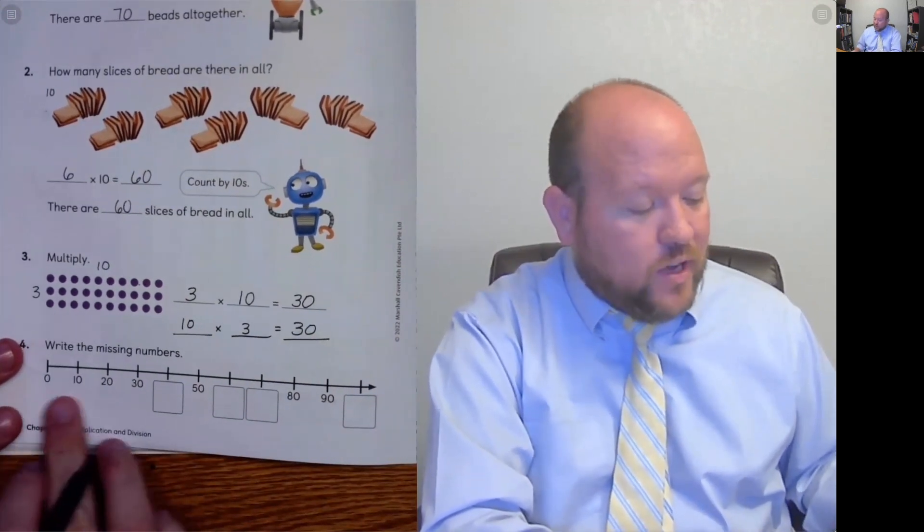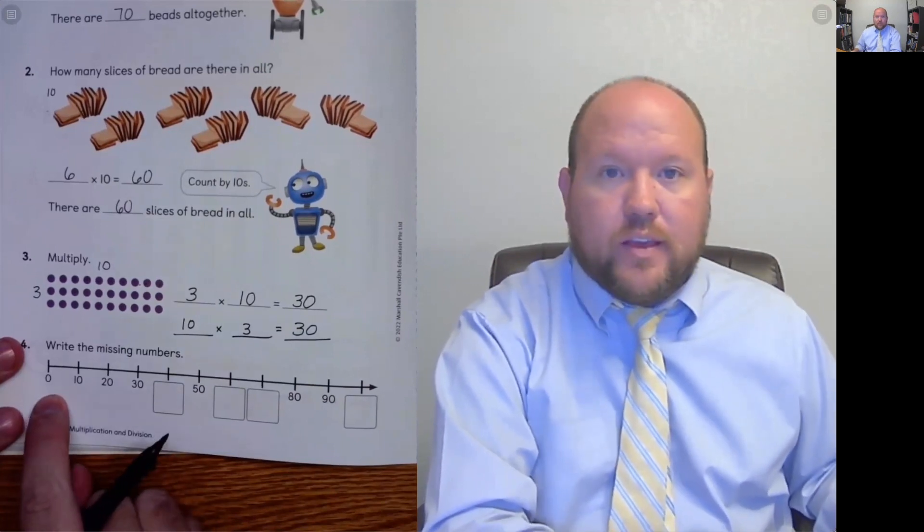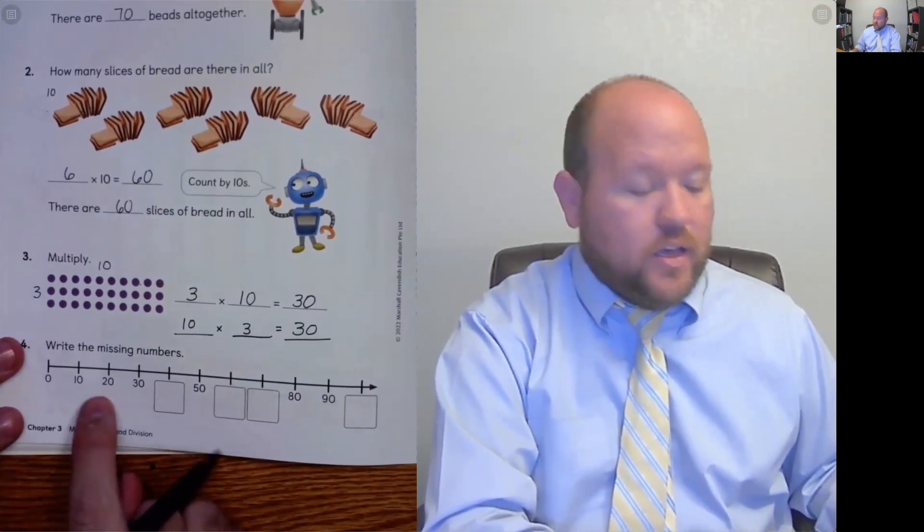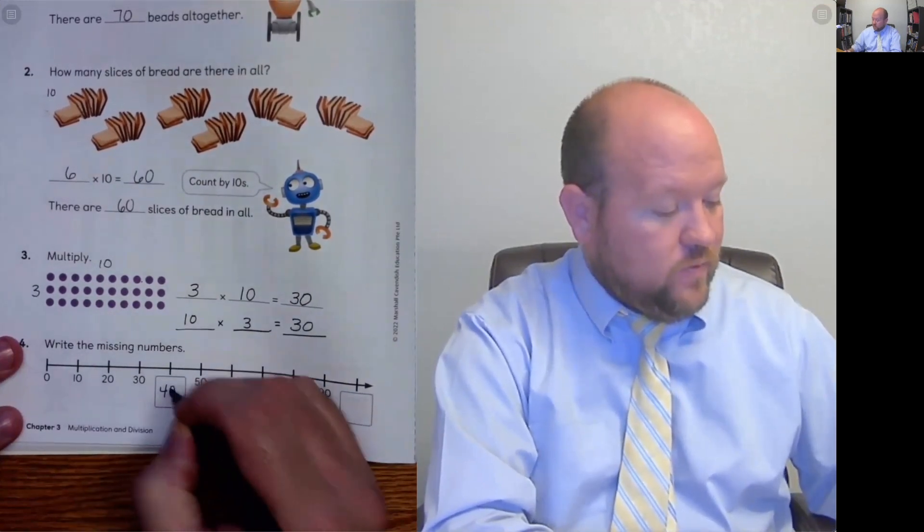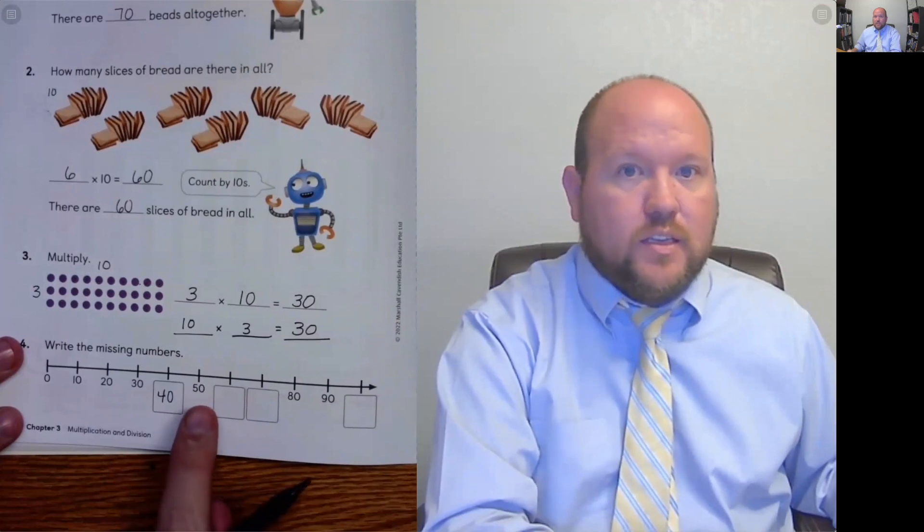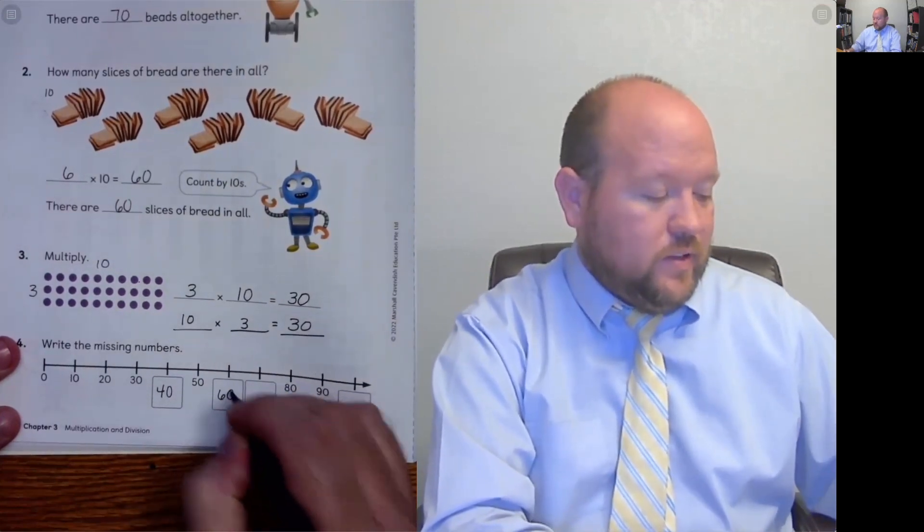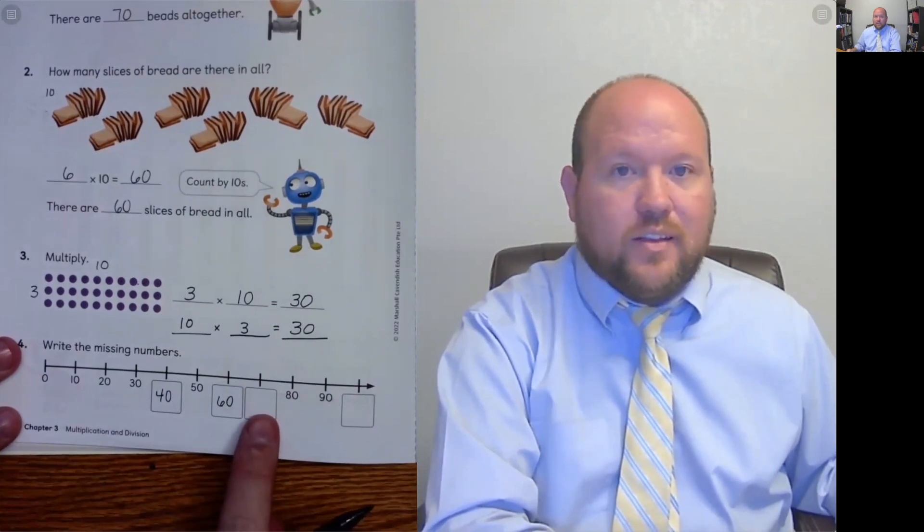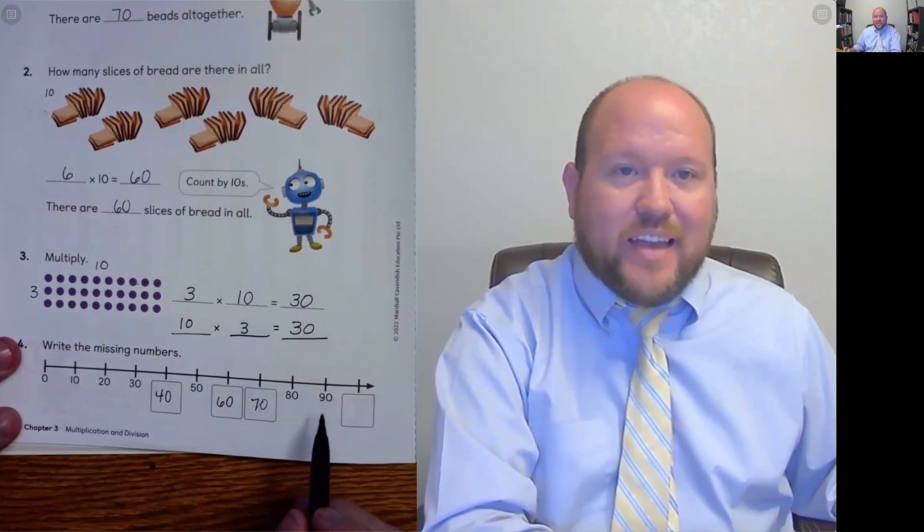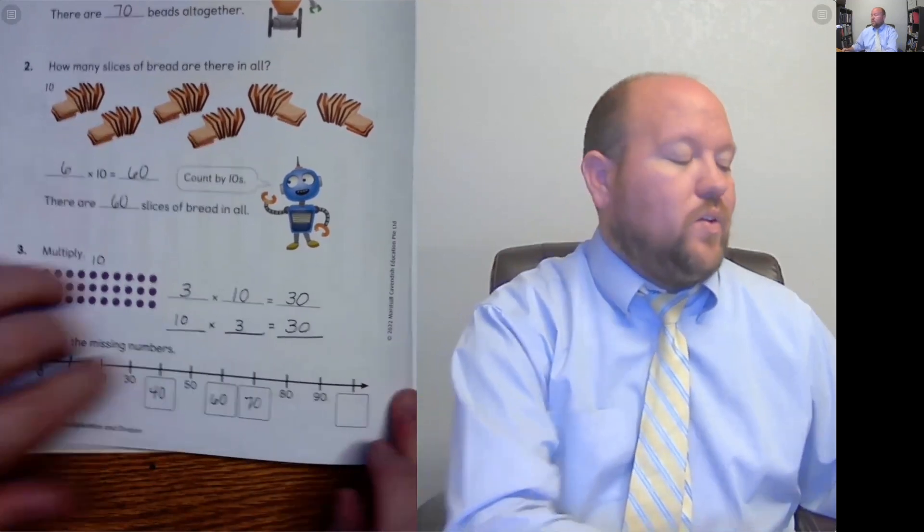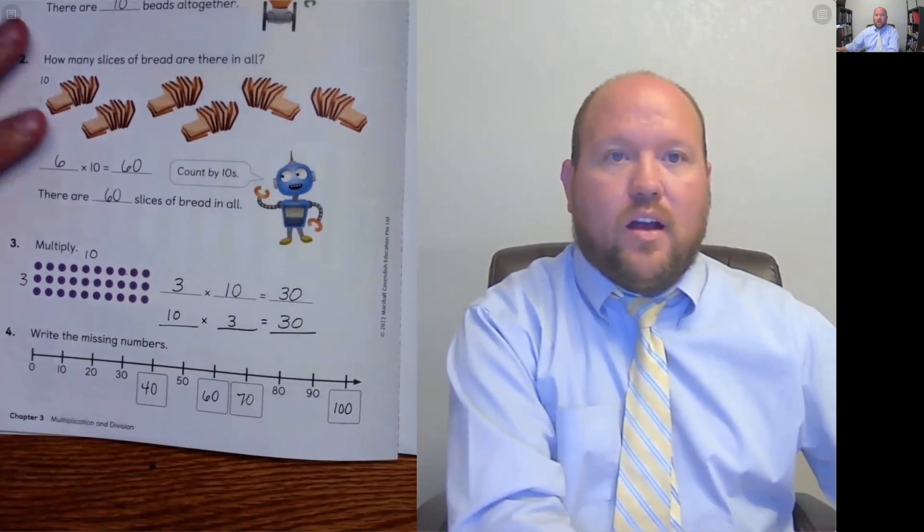Next, we're going to count up by tens and find the missing numbers. 0, 10, 20, 30, 40, 50, 60, 70, 80, 90, 100. Very good.